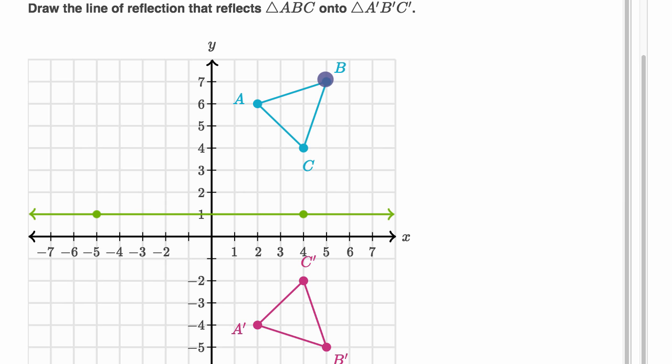Now let's just check out B. So B, we can see the Y coordinate here is seven. This line right over here is Y equals one. So what we would have here is six units above this line, and B prime is six units below the line. So this indeed works.